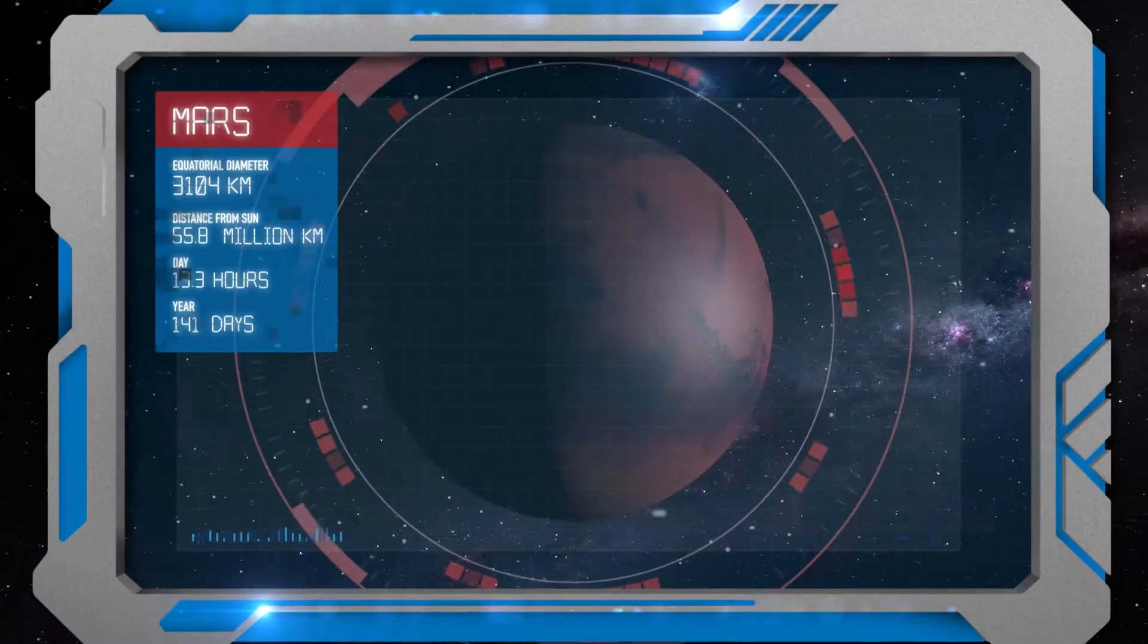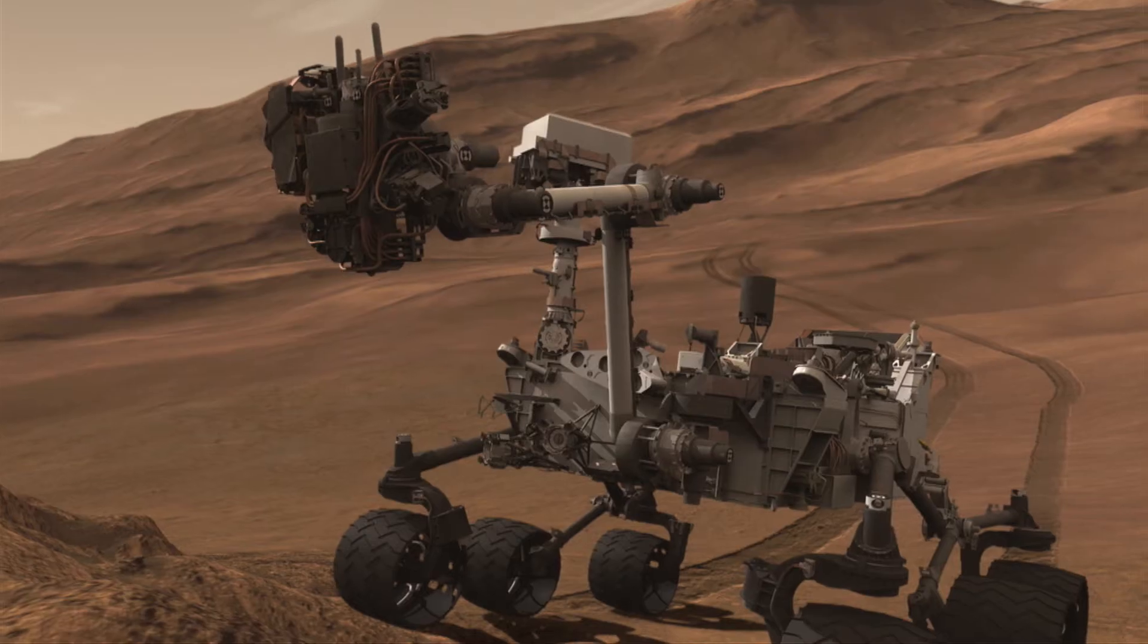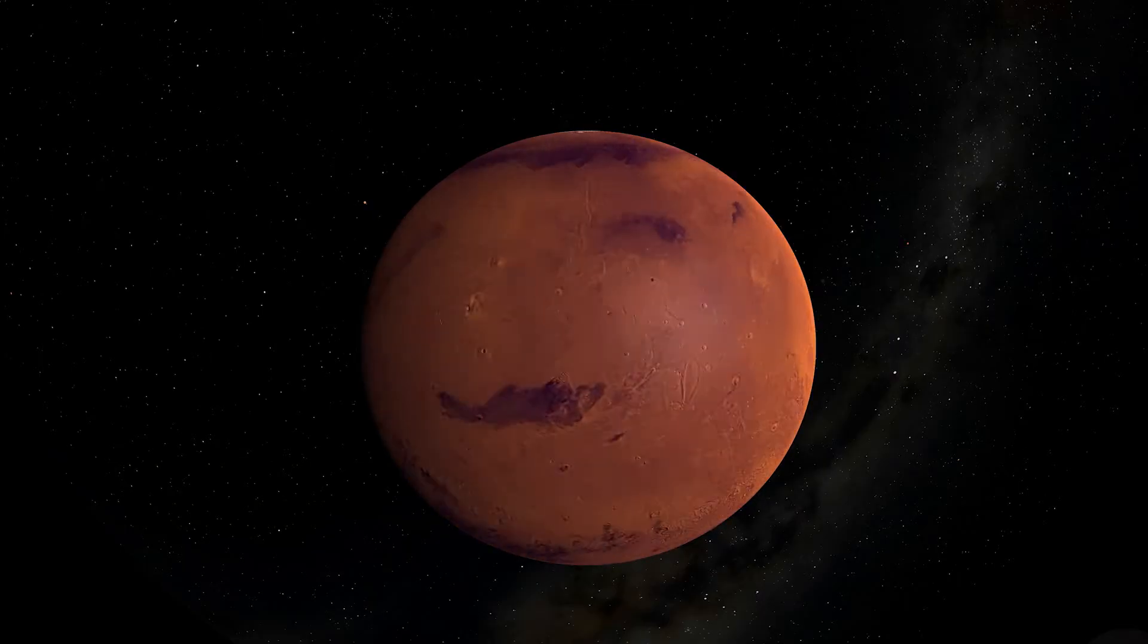Red planet Mars. Rovers roam the surface and robotic spacecraft create detailed maps showing water was once on the now dusty surface.